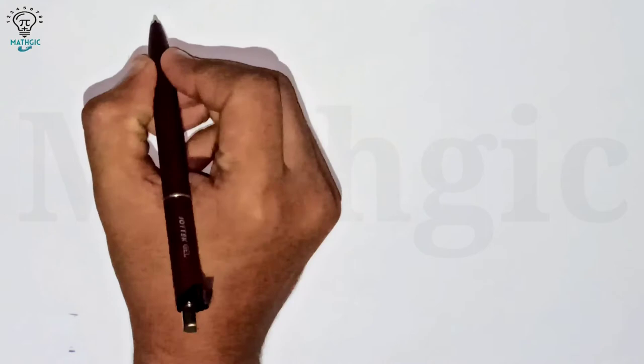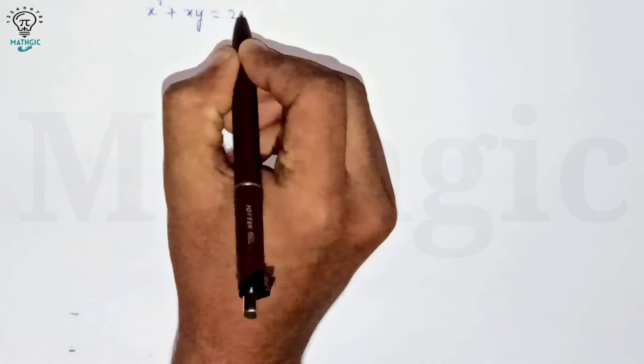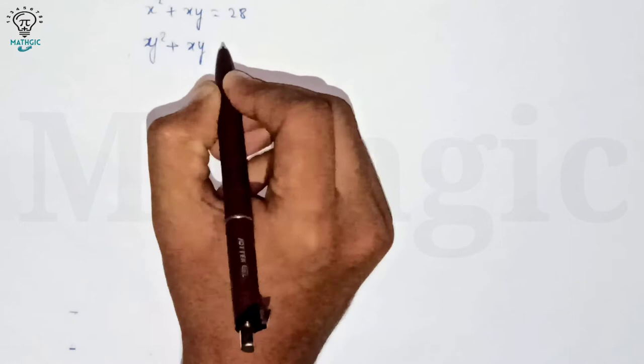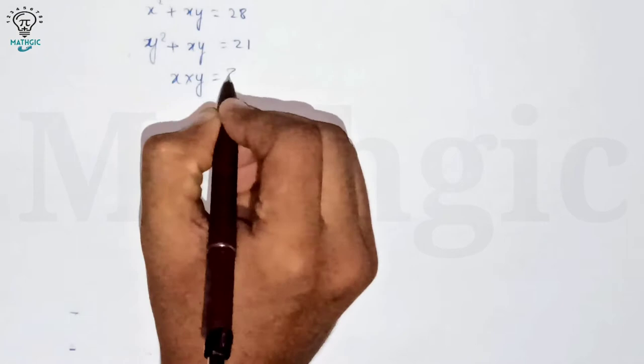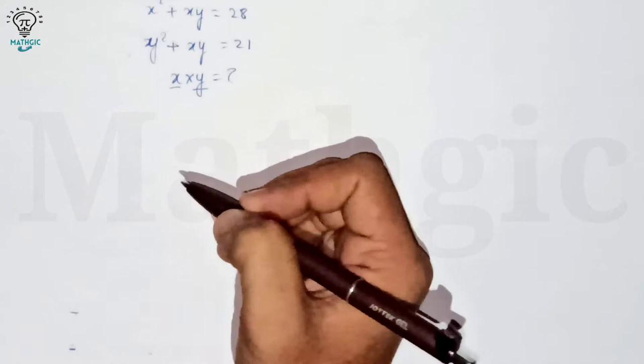The equations are x squared plus xy equals 28, and y squared plus xy equals 21. We have to find the value of x times y. For that, we need to find the values of x and y individually. Let's label these as equation number one and equation number two.